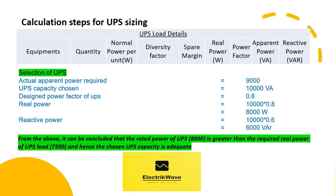For UPS selection: actual apparent power required equals 9000VA. UPS capacity chosen equals 10,000VA. Designed power factor of UPS equals 0.8, real power equals 8000W, reactive power equals 6000VAR. It can be concluded that the rated power of UPS at 8000W is greater than the required real power of UPS load at 7500W, and hence the chosen UPS capacity is adequate.